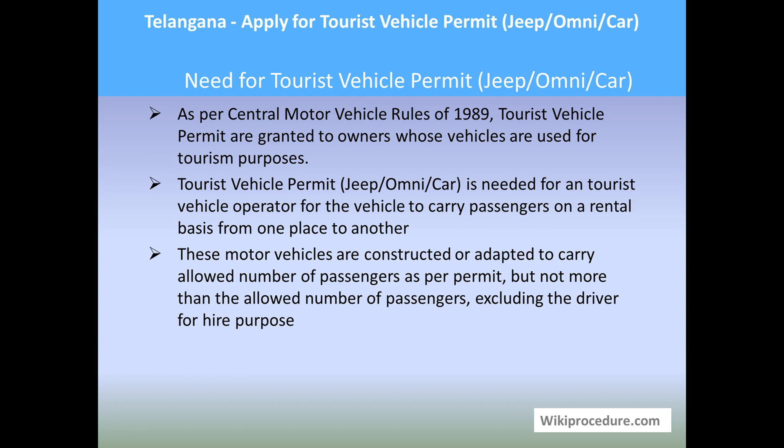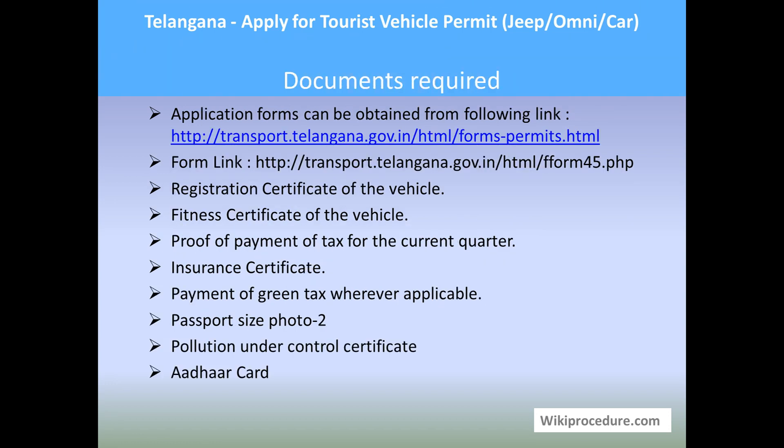The permit allows the vehicle to carry passengers on a rental basis from one place to another. These motor vehicles are constructed or adapted to carry the allowed number of passengers as per the permit — not more than the allowed number excluding the driver mentioned in that permit. The charges and the route they travel are restricted as per the permit. If they want to travel in other areas which are not permitted, they have to get a temporary permit to travel in those areas.